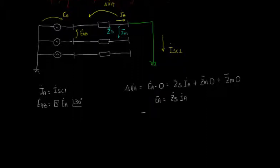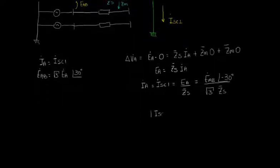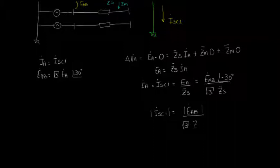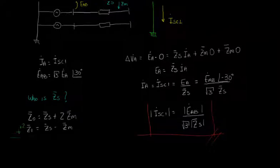Rearranging this expression by writing EA as function of EAB, we can say that the module of ISC1 is equal to the module of EAB divided by square root of 3 times the module of ZS. However, as you can check in the OpenDSS help menu, a vSource element has no attribute called ZS. It can't be defined with the parameters ZM and ZS. Then, what we need to do now is to find an expression that relates ZS with Z0 and Z1. From these two equations that we saw before, multiplying the second one by 2 and adding with the first one, we find that ZS is equal to one-third of Z0 plus two-thirds of Z1.